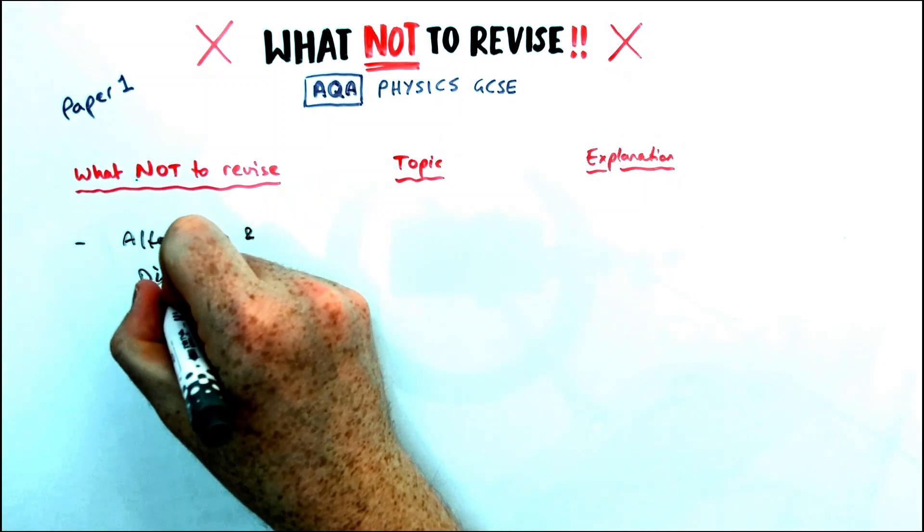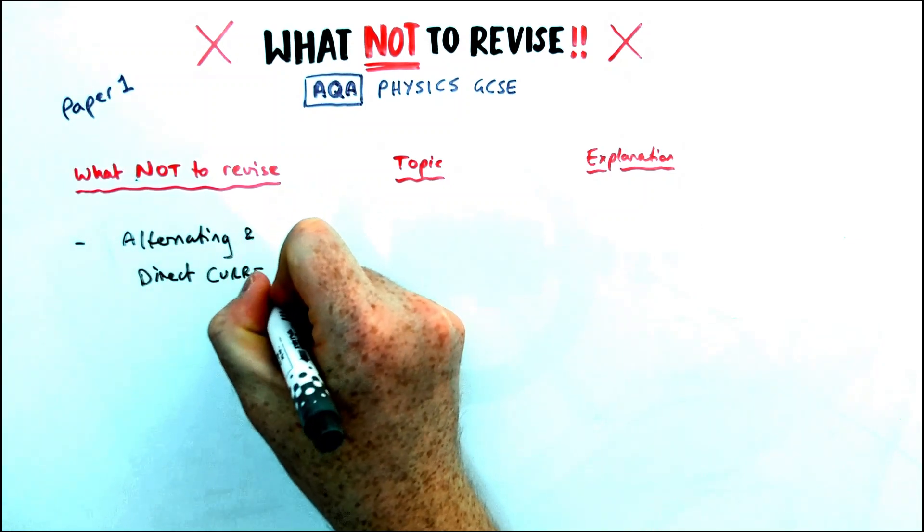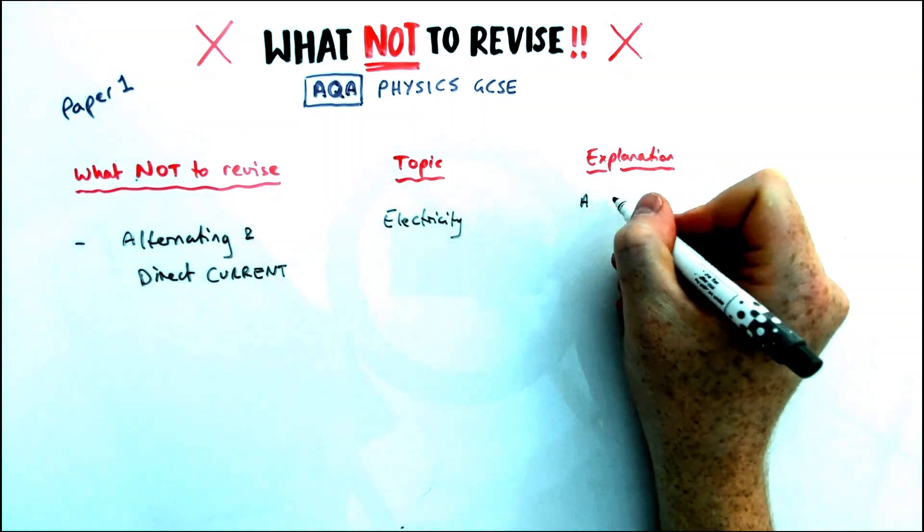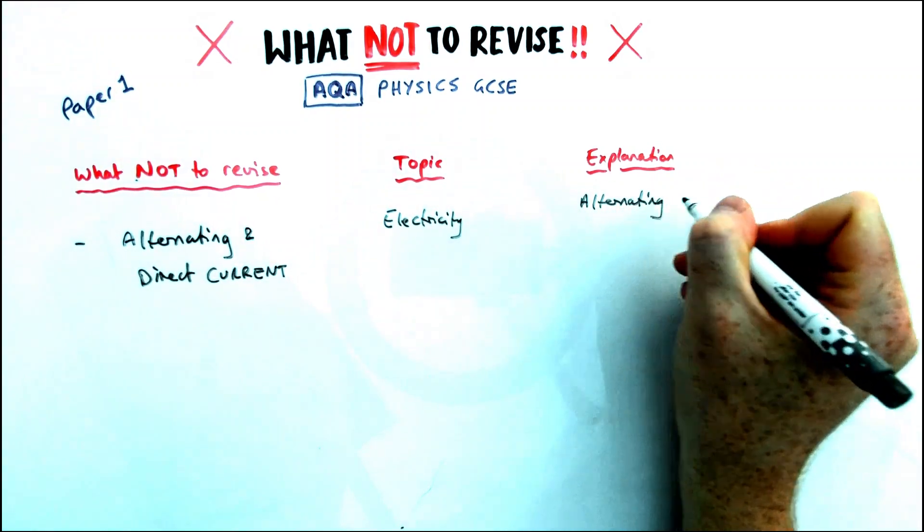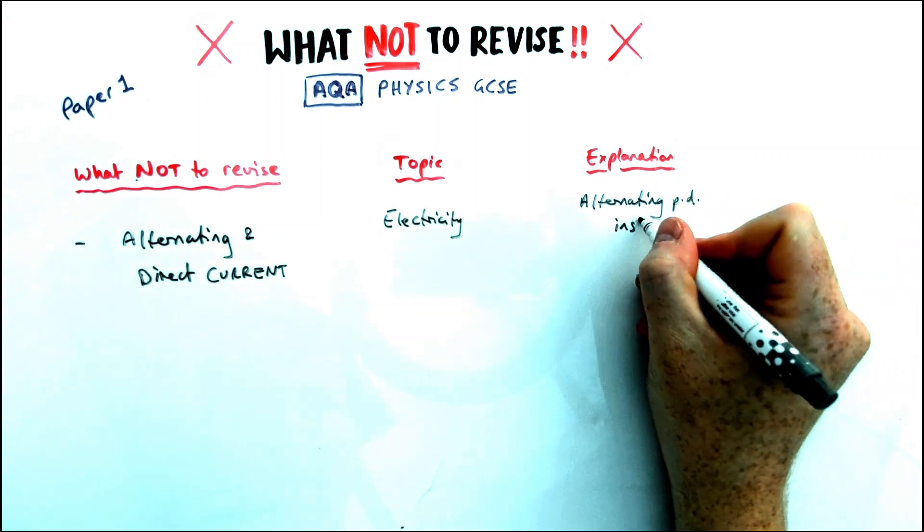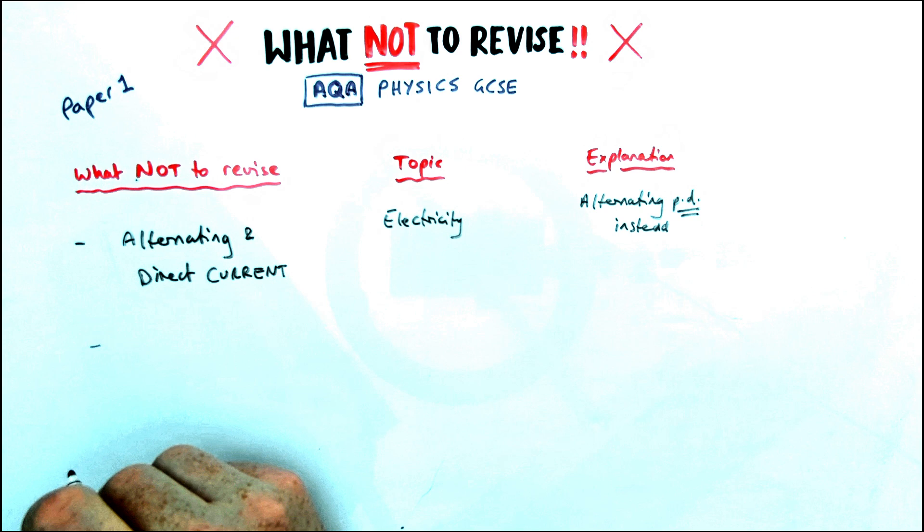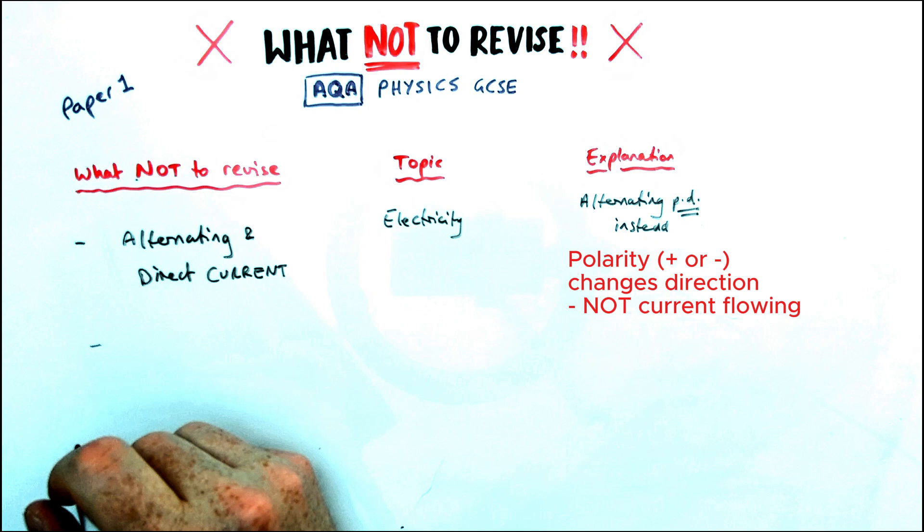Continuing our list from paper one, this is quite a big one. Do not revise anything to do with alternating or direct current. In the specification, it talks about alternating or direct potential difference, which then produces current, but actually doesn't mention those phrases at all in the specification. This caught people out a couple of years ago when it came up. So for alternating PD, you would talk about changing polarity or changing direction, not changing direction of current flow or anything like that.